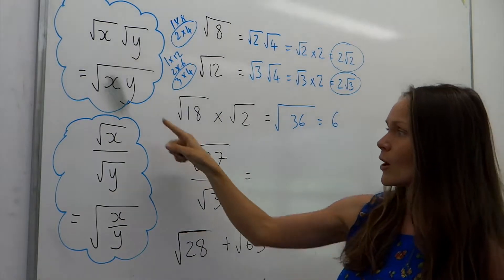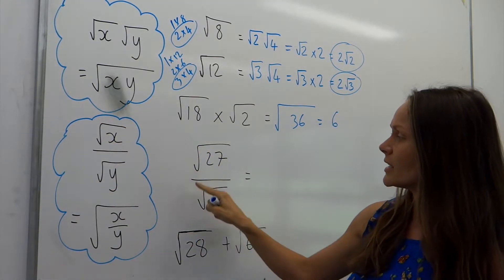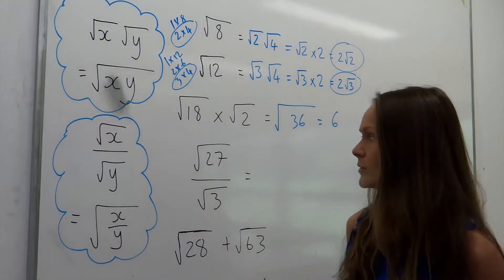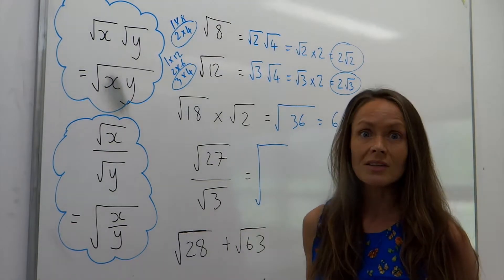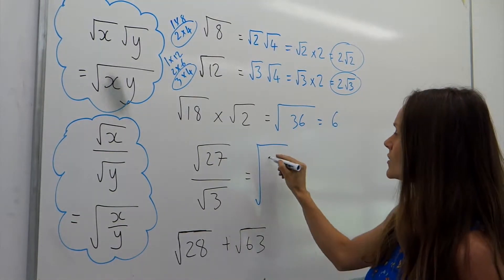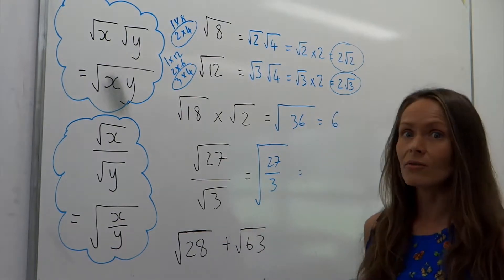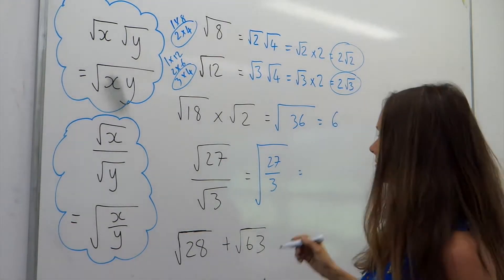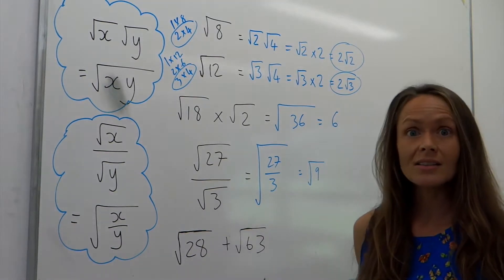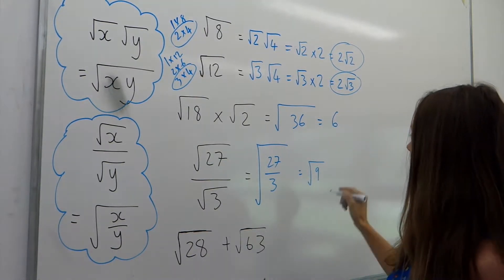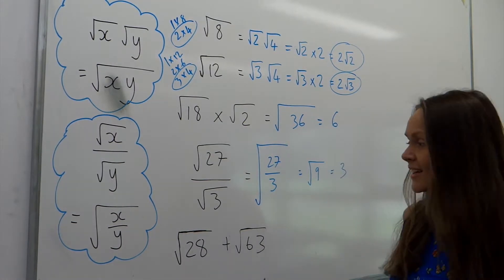Now on to division. When we're dividing one square root by another, it's the same as square rooting those two numbers divided together. So I'm doing 27 divided by 3, which is 9. Not forgetting the square root is still there, and 9 is a square number, so the square root of 9 is 3.